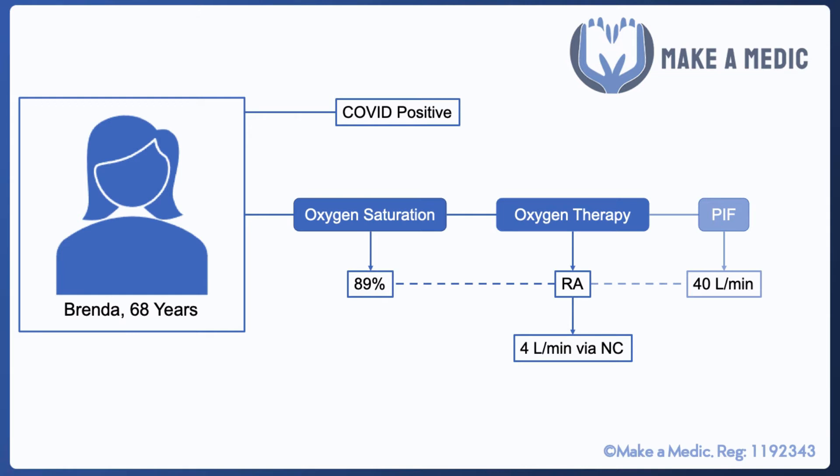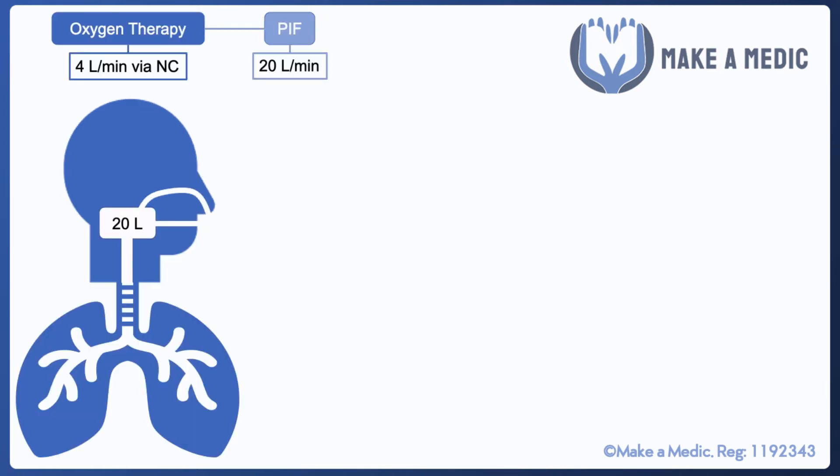What you do at that point is you put her on 4 liters per minute via nasal cannula, and it brings up her oxygen saturations to 96%. Consequently, you get a reduction in her breathing effort and her peak inspiratory flow comes down to about 20 liters per minute. Let's have a look at what's actually going on during these changes that we're making. Once we put the 4 liters per minute via nasal cannula on her, her peak inspiratory flow rate comes down to 20 liters per minute. That means that she has 20 liters per minute of air going into her airways during inspiration, of which 4 liters per minute will be from the nasal cannula and hence that will be 4 liters of 100% oxygen. The remaining 16 liters will come from the atmosphere, which is of course 21% oxygen.